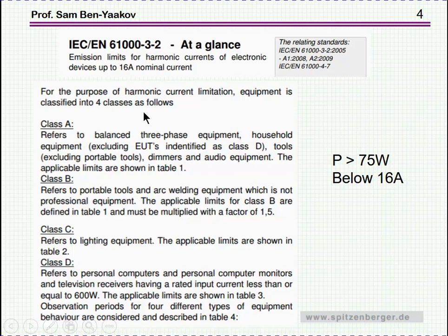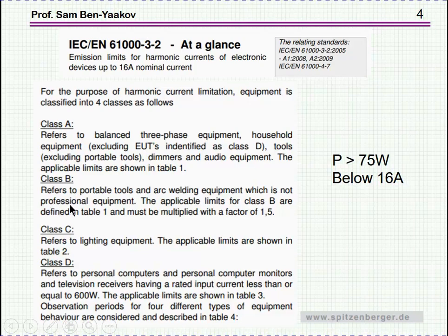The norm defines four types of equipment. Class A is household equipment — the general type of devices you'll find around, audio equipment, etc. Class B is portable devices like a drill or arc welding used by consumers, not professionally. This type of equipment is not used all the time, so the limits here are a little bit more relaxed — in fact, 1.5 times higher than the limits for class A.